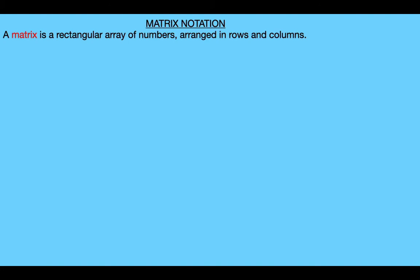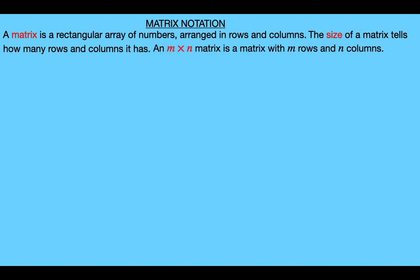So first let's just look at the definition of a matrix. A matrix is a rectangular array of numbers arranged in rows and columns, and the size of a matrix tells us how many rows and how many columns it has. By an m by n matrix we mean a matrix with m rows and n columns, so the first number represents the rows and the second number represents the columns.